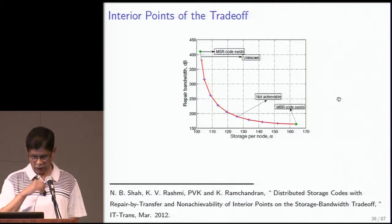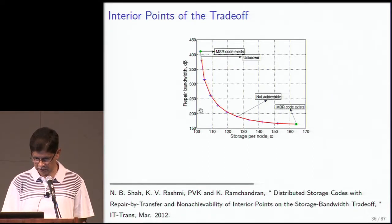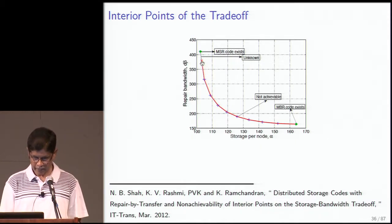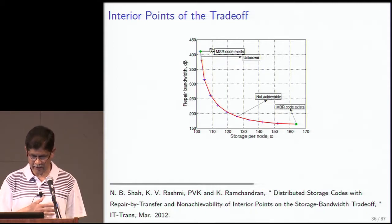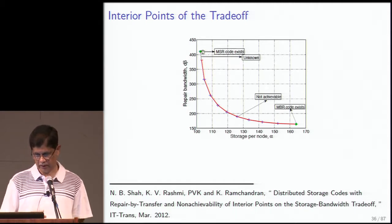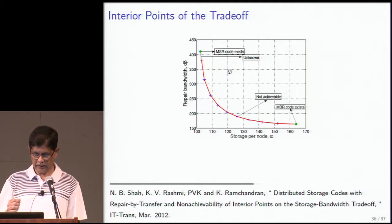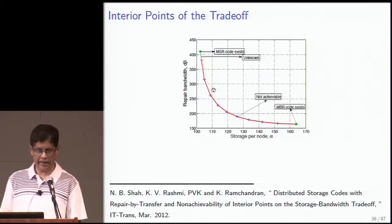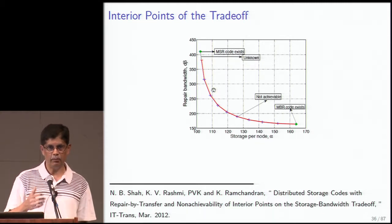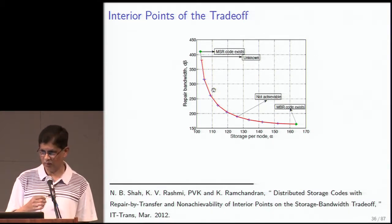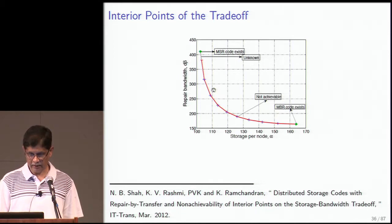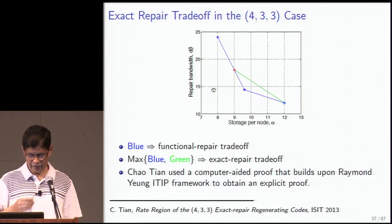Now, what about the interior points of the trade-off? Earlier Rashmi showed that in the red portion of the trade-off it is not possible to construct exact repair codes. On the other hand, results from Jafar, Cadambe, and Kannan Ramchandran showed it is possible to asymptotically approach the MSR point for all parameter values with exact repair. This raises the question: can you approach the interior points with exact repair, even if you can't hit them exactly?